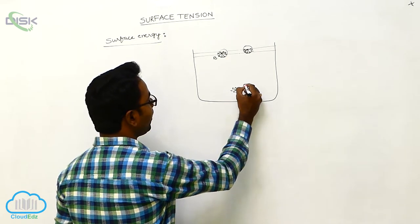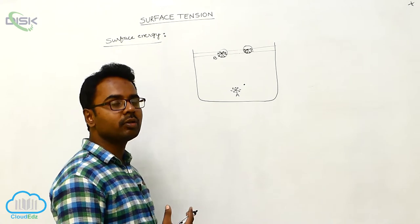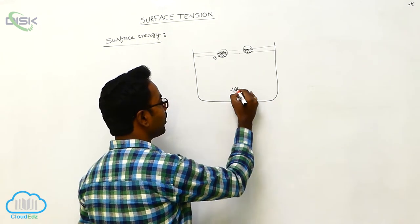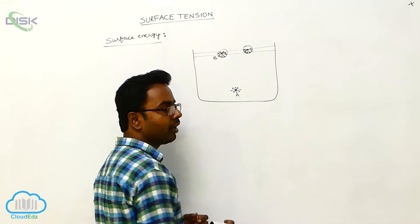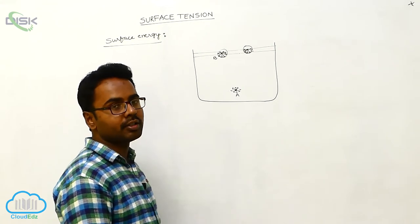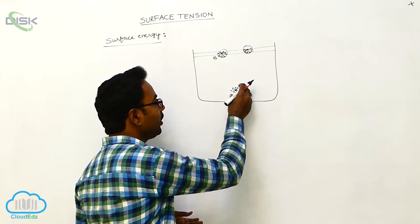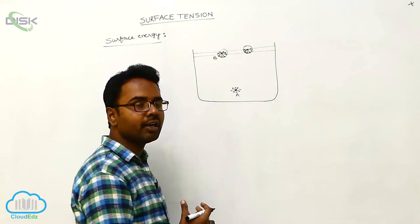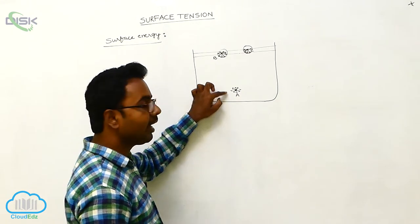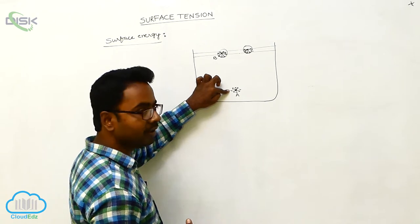If a molecule inside the liquid tries to come to the surface film, it has to overcome the molecular force of attraction surrounding it. Take molecule A as an example — it is surrounded by molecular forces. If molecule A has to come to the surface film, its energy increases because it has to do work against the molecular force of attraction. When a molecule is inside the liquid its potential energy is less, but when it comes to the surface film its potential energy increases.